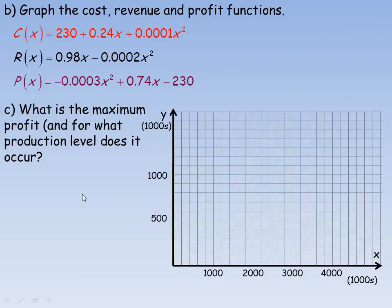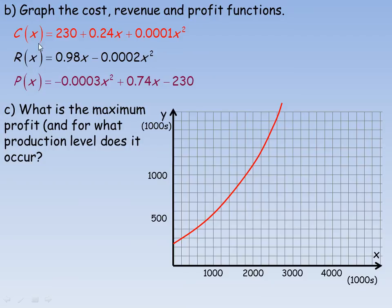Graphing all three functions: the cost function is a positive quadratic that opens upward. With a constant of 230, it starts at 230 when x is 0. Substituting x equals 1,000 gives a cost of just under 600. You can graph it using a couple of points or a table of values.